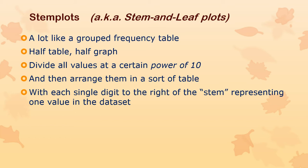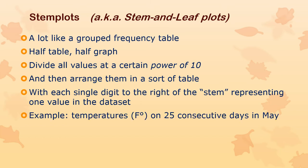You arrange the data in a table where each single digit to the right of the stem represents one value in the data set. So every number gets turned into essentially two digits: a digit to the left of the stem, which is a certain power of 10, and a rounded-off digit to the right of the stem, which is one power of 10 smaller.